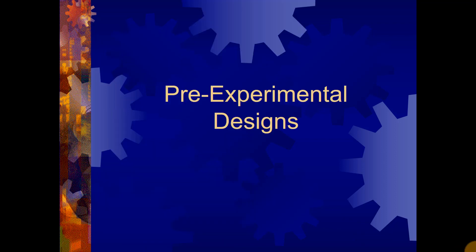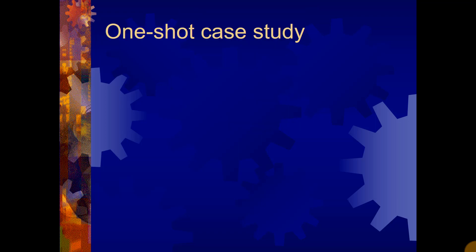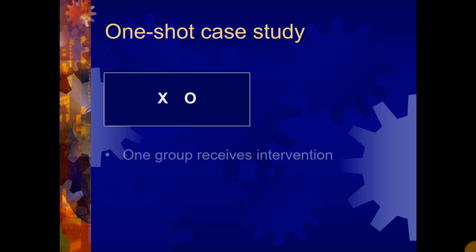So let's get into some pre-experimental designs. The first is called the one-shot case study, and it looks something like this. This should look very familiar because we literally just went over it on the previous slide, but now it has a name. So let's review. One group receives the intervention, then observations or measures are taken. That's it.